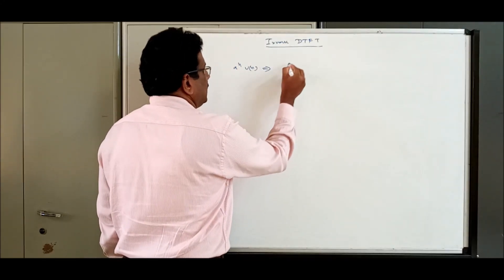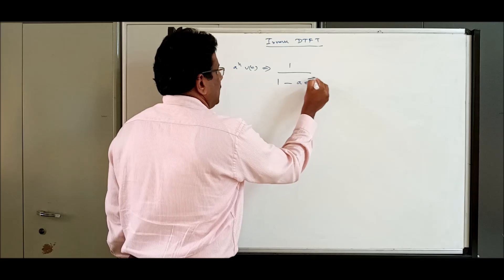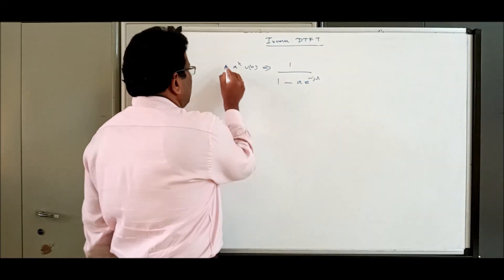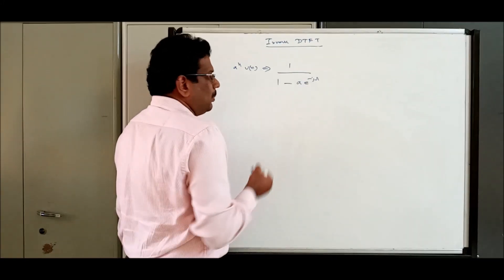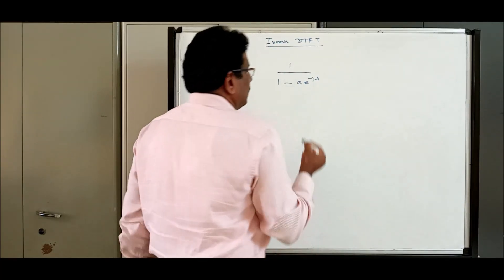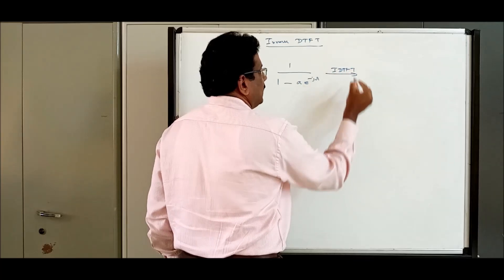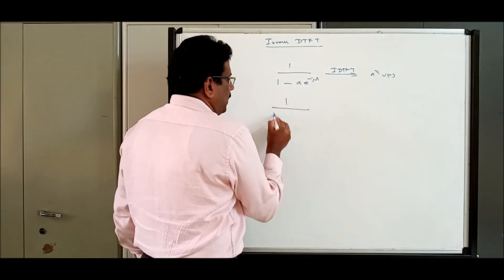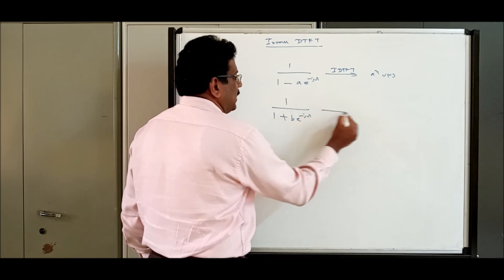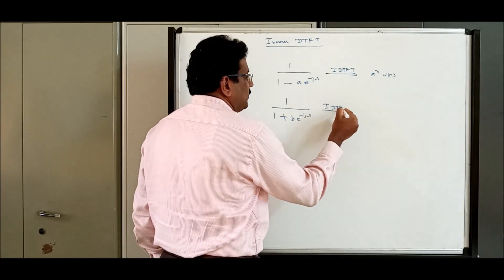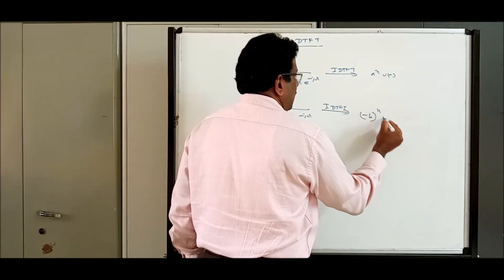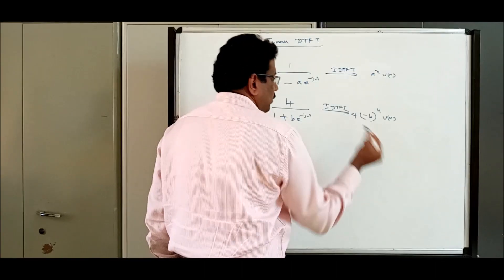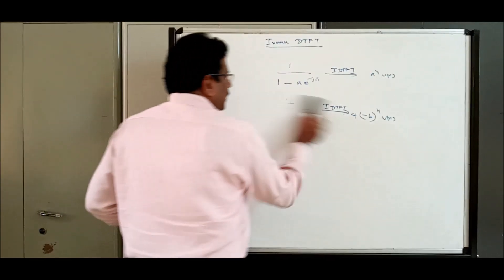What is a^n u(n)? Its DTFT is 1 by (1 minus a·e^(-jω)). Now, if I have 1/2 as a constant here, it will be 1/2. What is its inverse DTFT? It is a^n u(n). Remember: if I have 1 by (1 plus b·e^(-jω)), its inverse DTFT will be minus b^n u(n), because plus b gives minus. If there is a constant like 4, you just multiply by that constant.